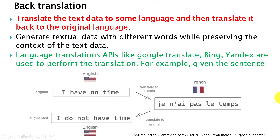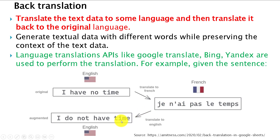The first technique is back translation, which translates the text data to some language and then translates it back to the original language. For example, we have the text 'I have no time' in English. We use some APIs to transform this text to French, then translate it back to English again, obtaining another variation of the original text. In this way, we can transform our original text into other languages and back to expand our data. Translation APIs like Google Translate and Bing can be used for this purpose.